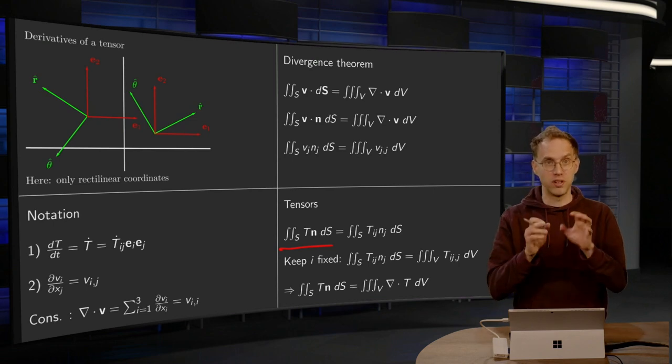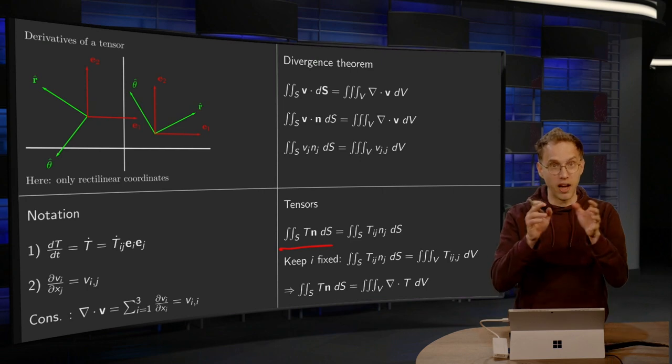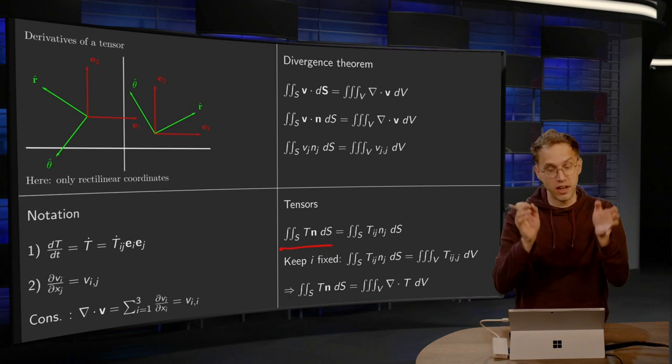So this T times n will give us some vector. We will have to rewrite that integral to an integral over the entire volume.